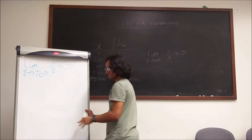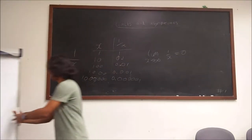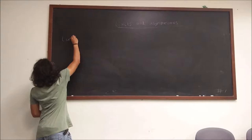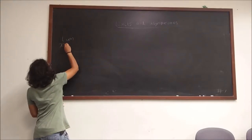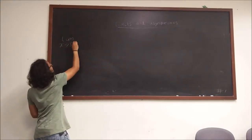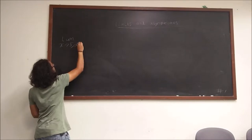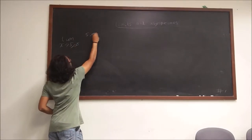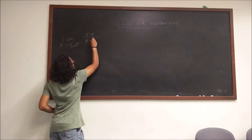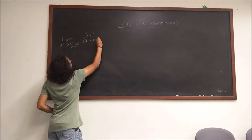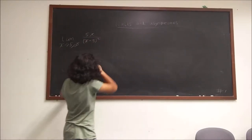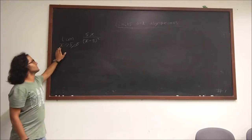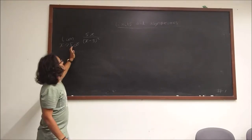I'll keep those definitions aside and bring them up when needed. Let's try to find the limit of x tending towards 5 and infinity of 5x over (x minus 5) all squared. We're going to find the limit as x tends to 5 and as x tends to infinity.